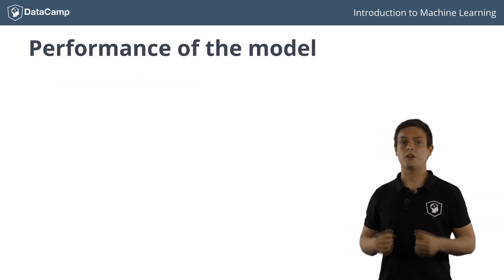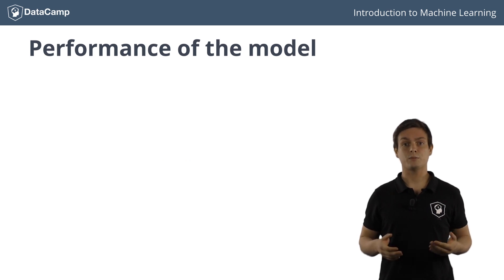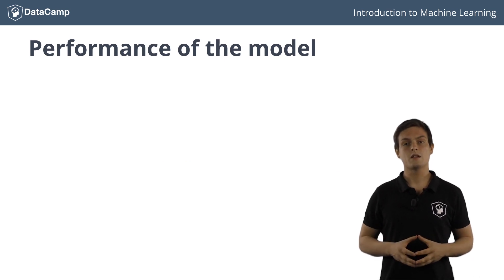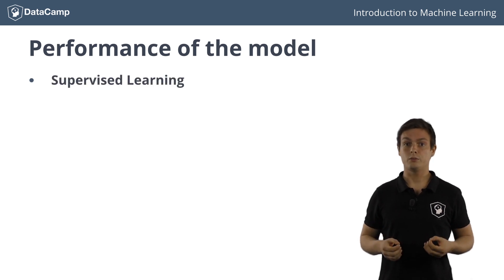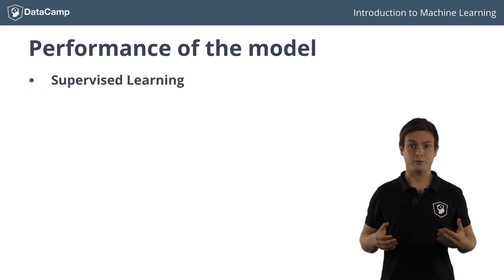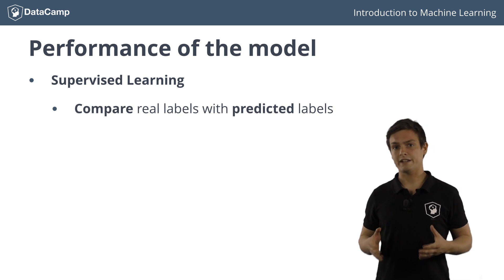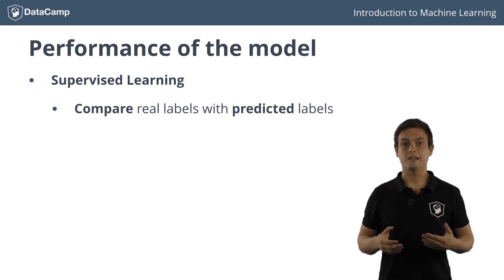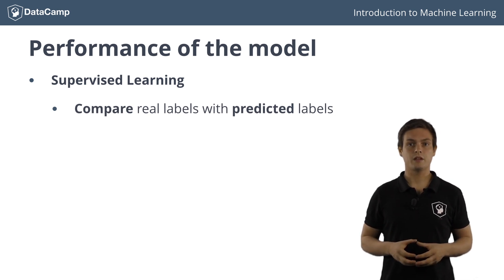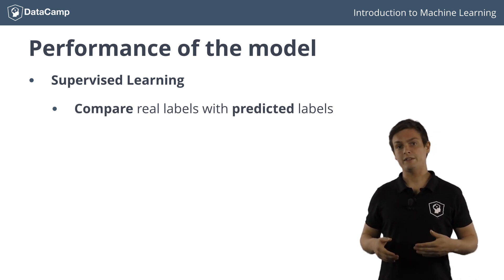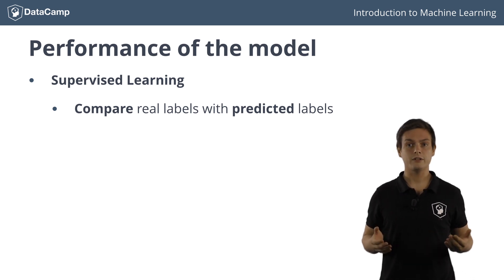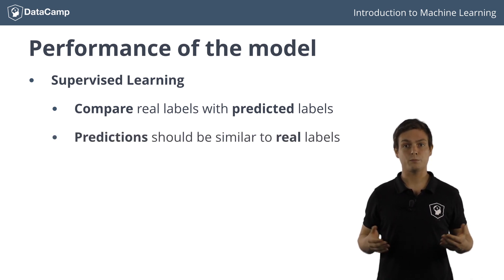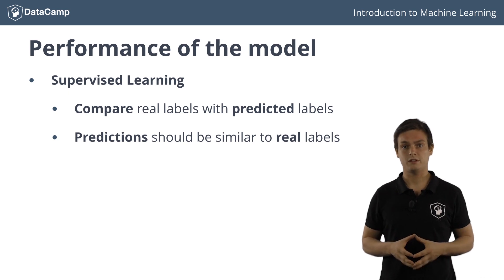In the next chapter, we will talk about assessing the performance of your trained model. In supervised learning, we can use the real labels of observations and compare them with the labels we predicted. It is quite straightforward that you want your model's predictions to be as similar as possible to the real labels.